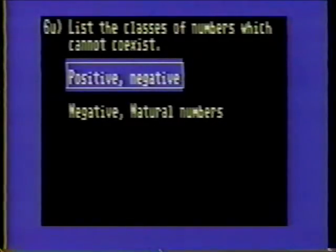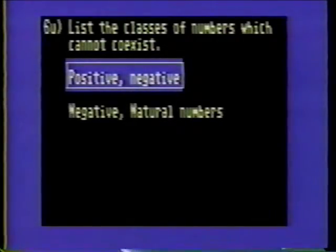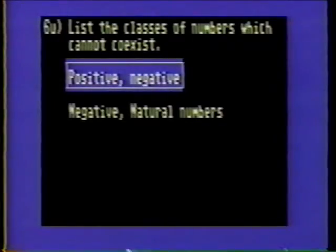Problem 6U. List the classes of numbers which cannot coexist. A number cannot be negative and positive at the same time. A natural number and a negative number cannot coexist.